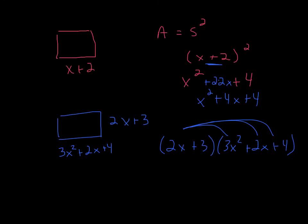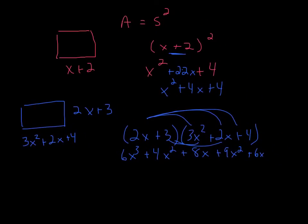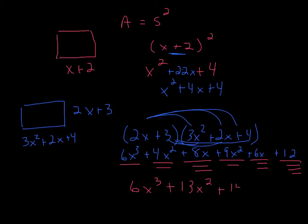So 2x times 3x squared is going to give you 6x to the third. 2x times 2x will give you 4x squared. And 2x times 4 will give you 8x. And we're going to do 3 times 3x squared will give you 9x squared. And then 3 times 2x will give you 6x. And then 3 times 4 will give you 12. So now we combine like terms. We only have one of those. We've got 2x squareds. We have 2x's. And we have one constant. So that will give you 6x cubed plus 13x squared plus 14x plus 12. And there you go. So that's how you do area.